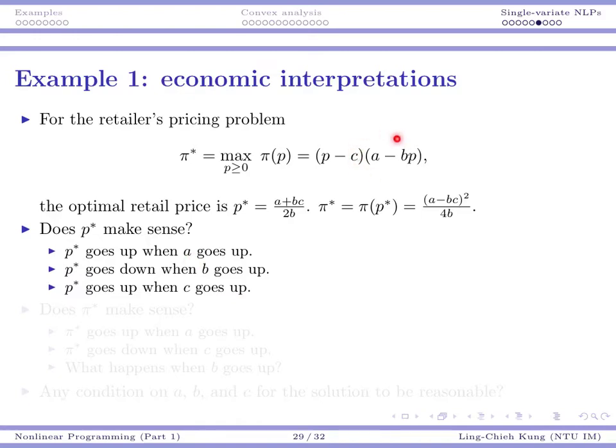a is something like a base demand. When price is zero, how many people would like to buy your product? If a is larger, that means you are running business in an easier environment, in an easier situation. More people naturally like your product. So if a is larger, you are going to charge a higher price, because you can do that to maximize your profit, because people just like your product.